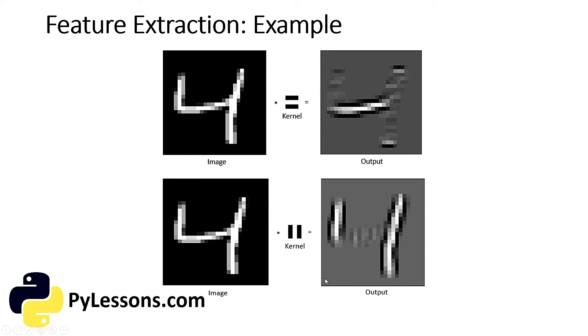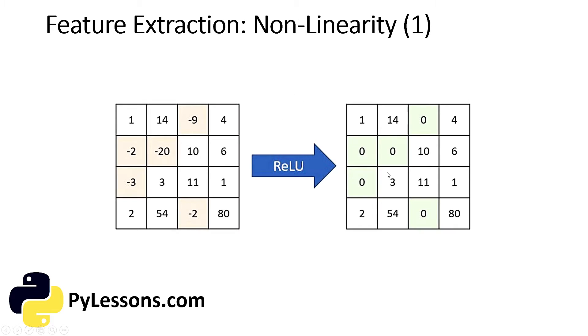Another thing is non-linearity. After sliding our filter over the original image, the output which we got passes through another mathematical function which is called an activation function. The activation function usually used in most cases in CNN feature extraction is ReLU, which stands for Rectified Linear Unit. It simply converts all of the negative values to zero and keeps the positive values the same.